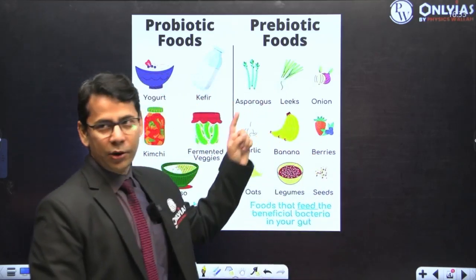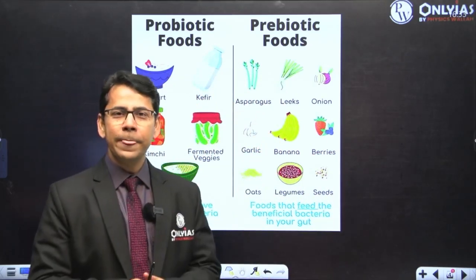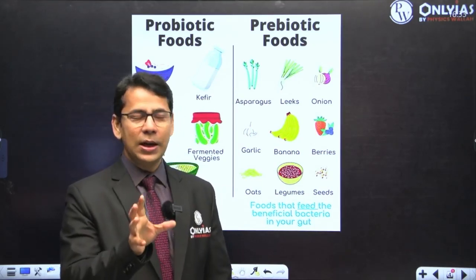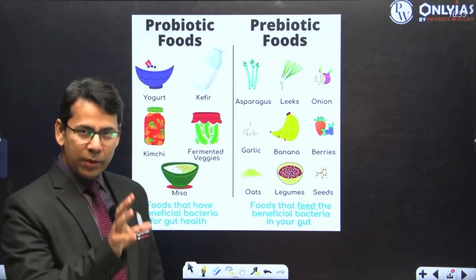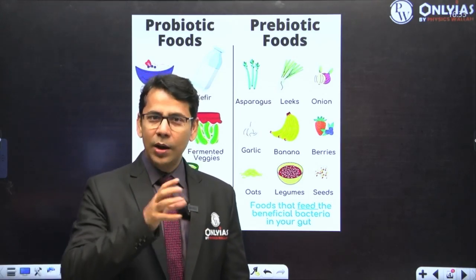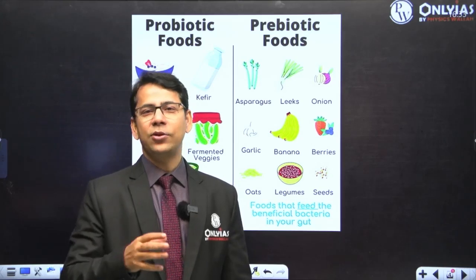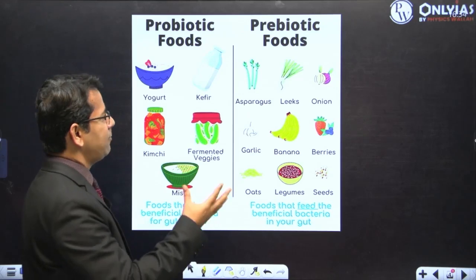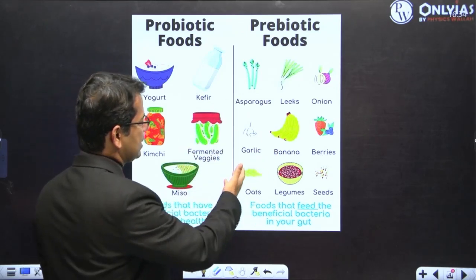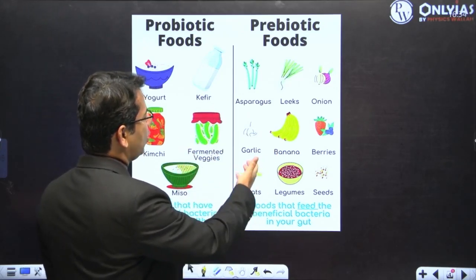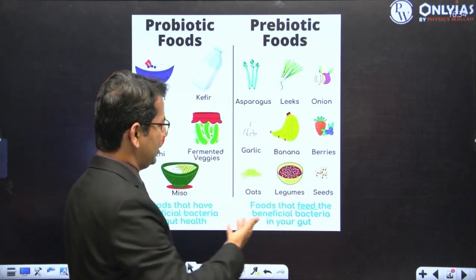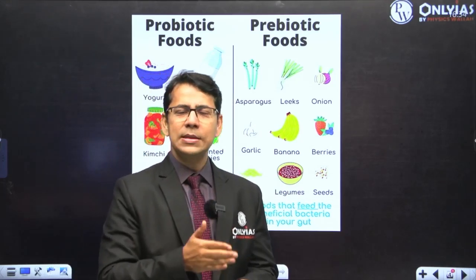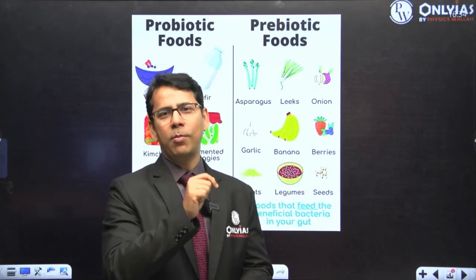Another category is prebiotic food. Prebiotic foods don't have any live bacteria in them. But if you eat this food, it will create a condition that is very suitable for the bacteria already living inside your gut. These are nothing but fibrous foods — like all vegetables, seeds, legumes, oats, banana, berries, and all such things. In our modern lifestyle, we started using refined food with less and less fibrous food, and there the problem is.